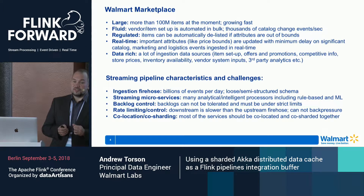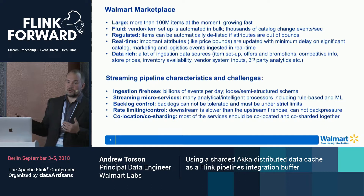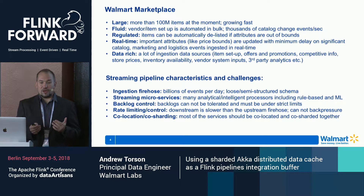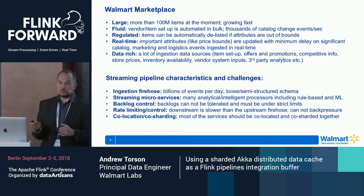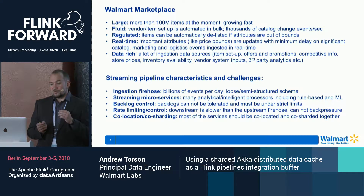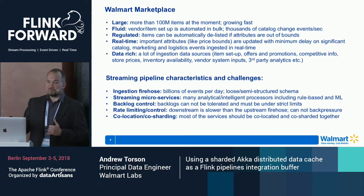Ideally we would like to set a pretty much constant rate limit on our downstream sinks, because we know at which rate our downstream systems can ingest our data — they tell us — and that's the rate we publish at. We don't want to impose any rate limits on the firehose, so downstream has a strict limit, upstream doesn't have any limit, and it's much faster than downstream.